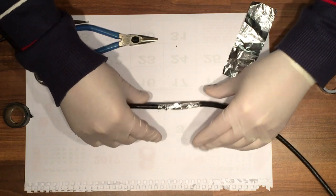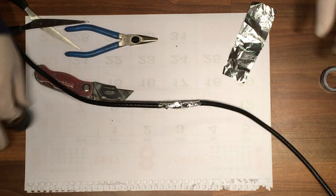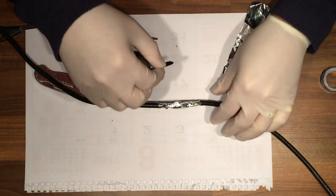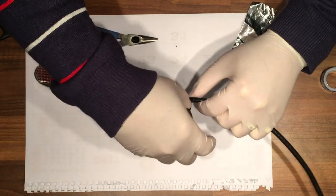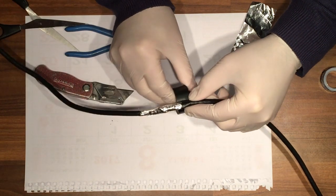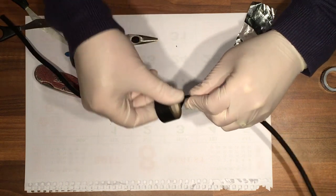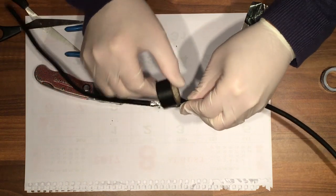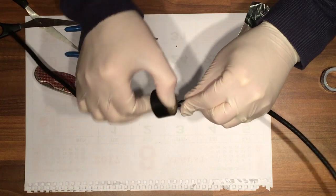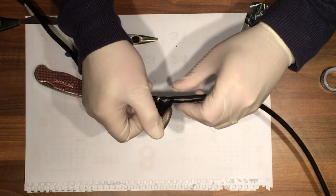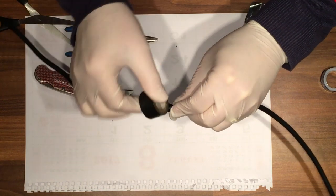Again with the insulation tape, you just start at the edge of the black insulation on the cable and work your way around, going at an angle so that it will work its way down the cable.